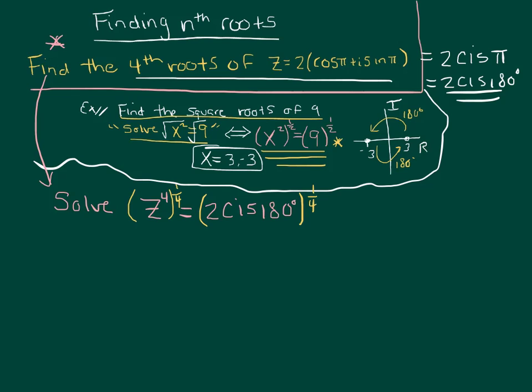Now this is really convenient because when I raise z to the fourth to the one-fourth I just get z. And when I raise a complex number in trig form to a power, we know that means to raise the r value to that power and to multiply my angle times that power.